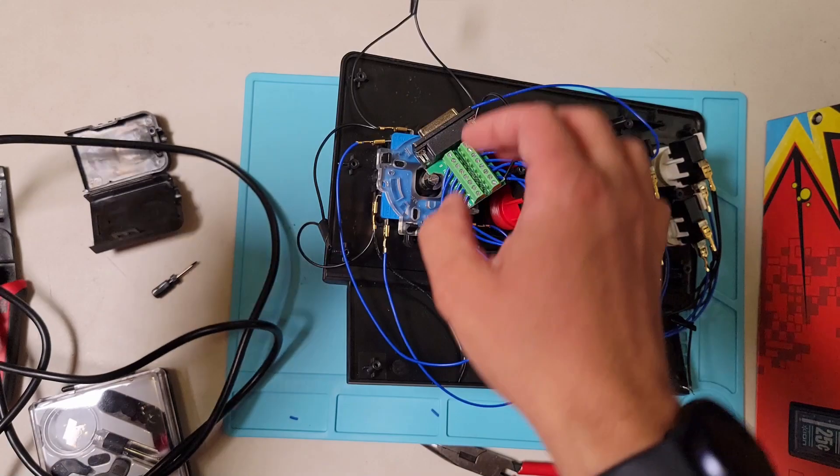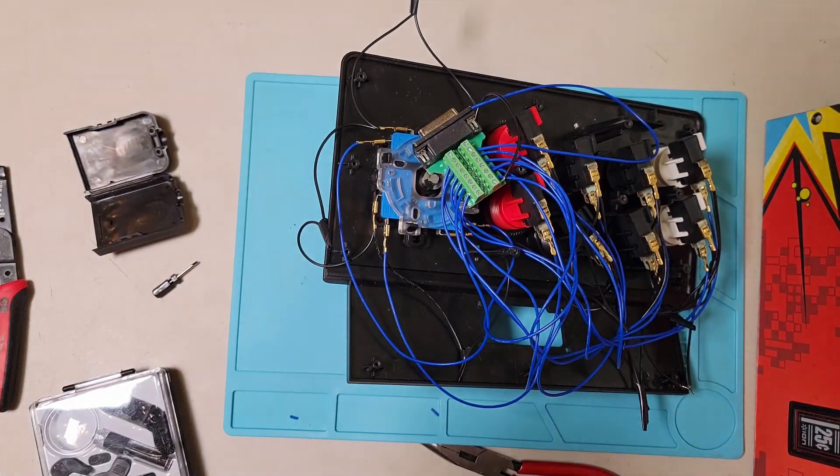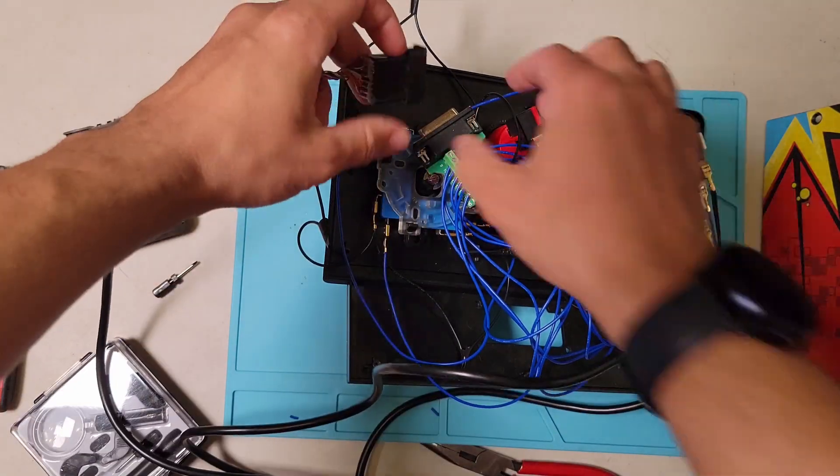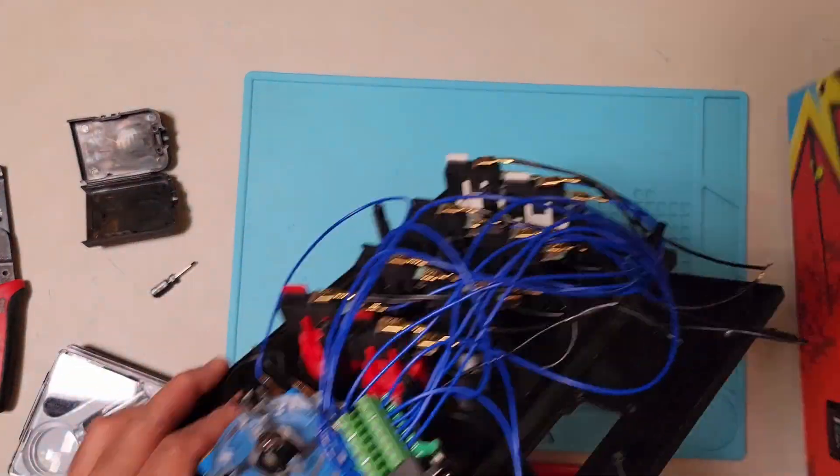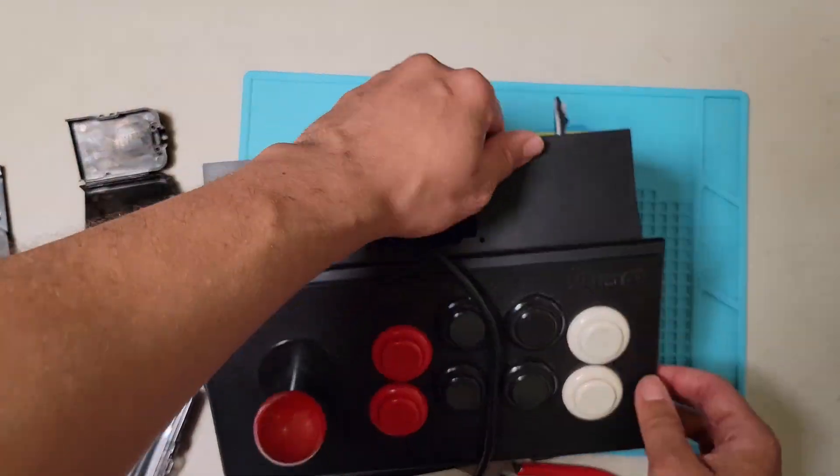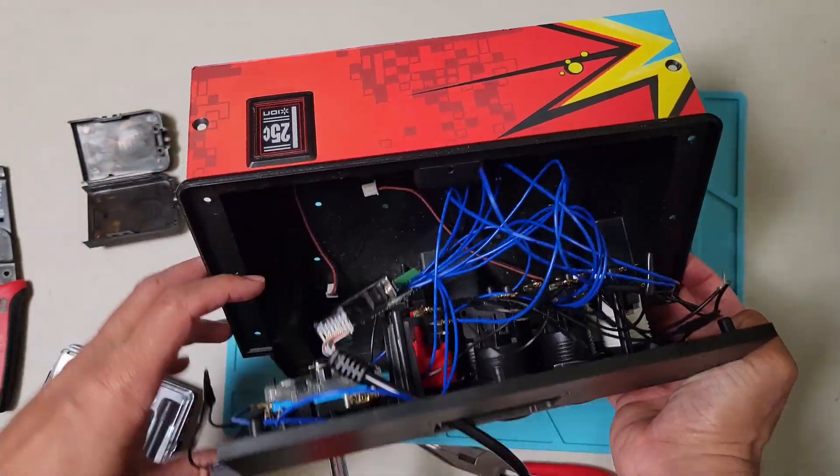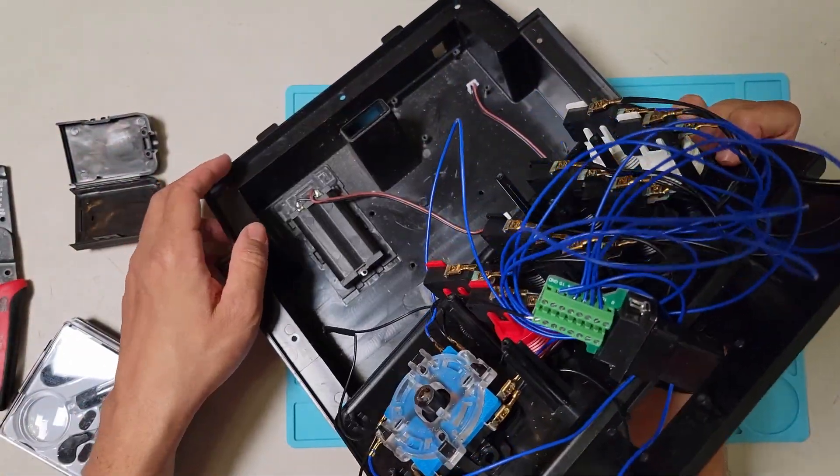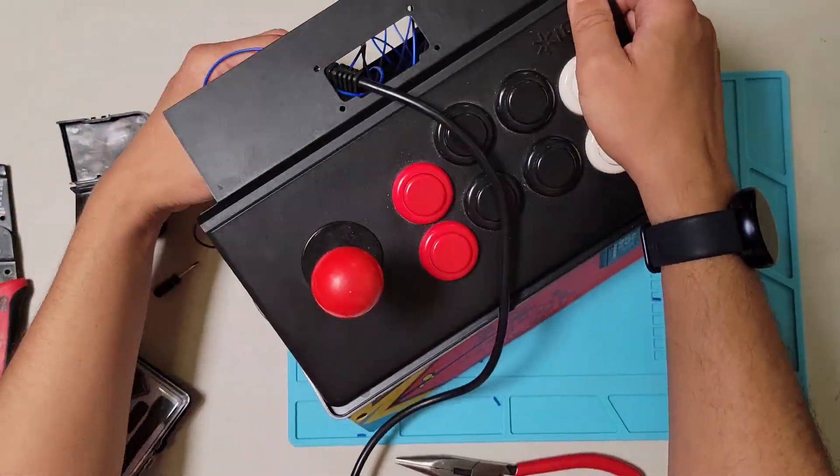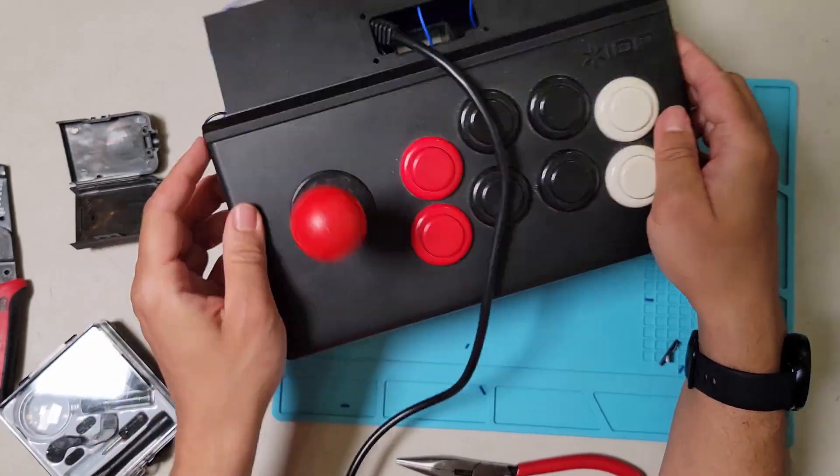Obviously, this DB15 plug is not going to reach my Neo Geo, so I'll just use the extension cable to fix that. Then put the controller back in its housing. I seem to have trouble closing it completely. It looks like the DB15 adapter prevents the enclosure from fully closing. Since this is a temporary project, I don't mind that it doesn't fully close. I'll test it out as is.